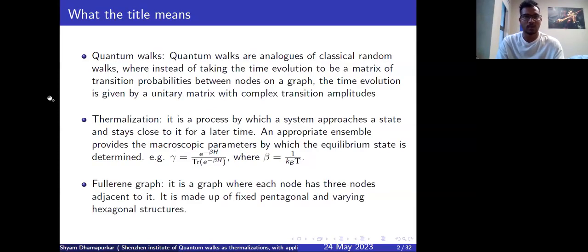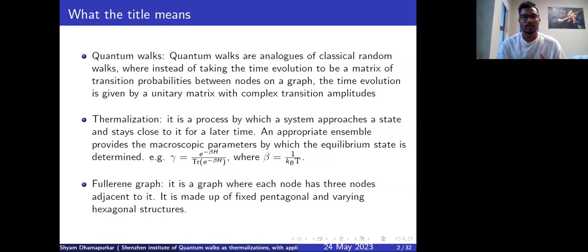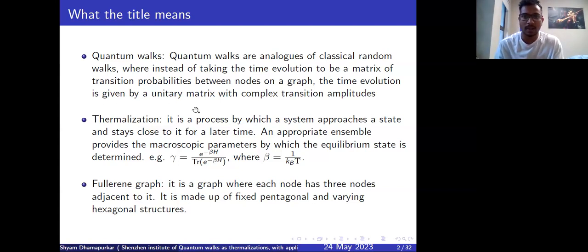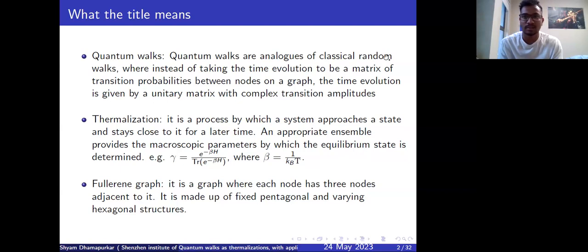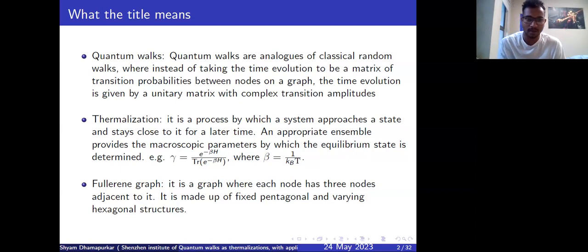Quantum walks are analogs of the classical random walk, where instead of taking the time evolution to be a matrix of transition probabilities between nodes on the graph, the time evolution is basically given by a unitary matrix with complex transition amplitudes. Thermalization, as you all might know, is a process by which a system approaches a steady state and stays close to that steady state for later times.